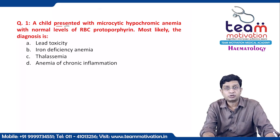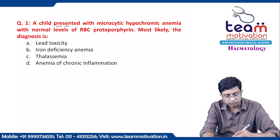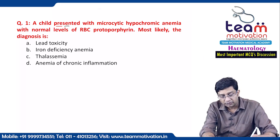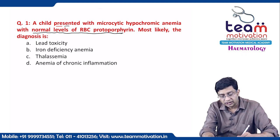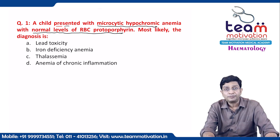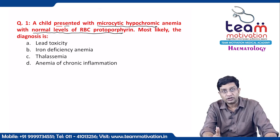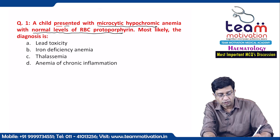A child presented with microcytic hypochromic anemia with normal levels of RBC protoporphyrin — what is the most likely diagnosis? Microcytic hypochromic anemia can be seen in all four conditions, so the key point is which one has normal levels of RBC protoporphyrin.